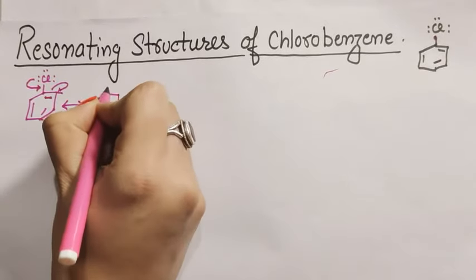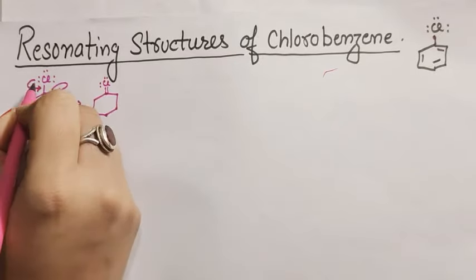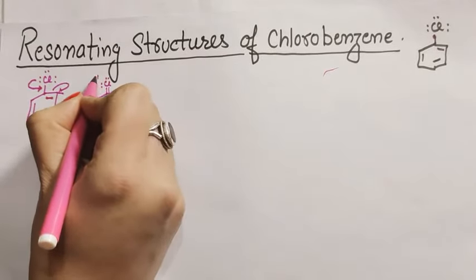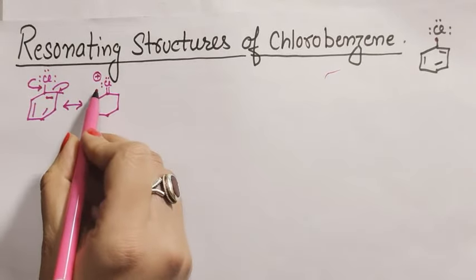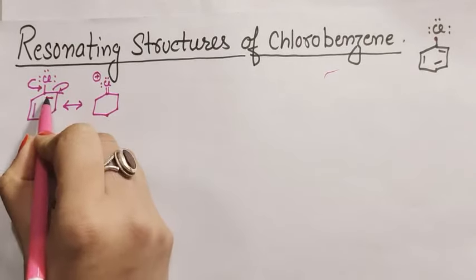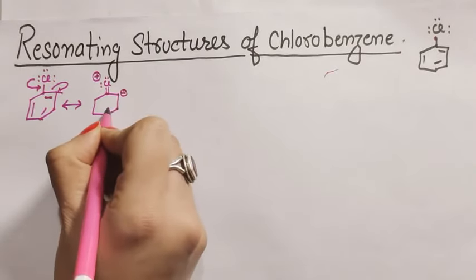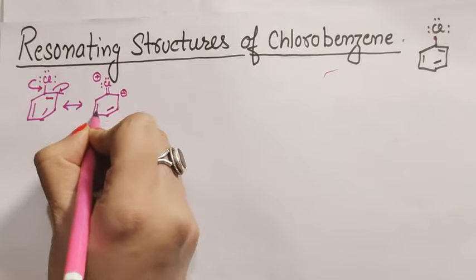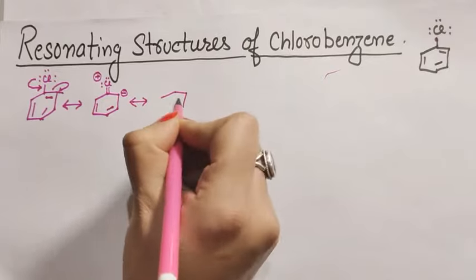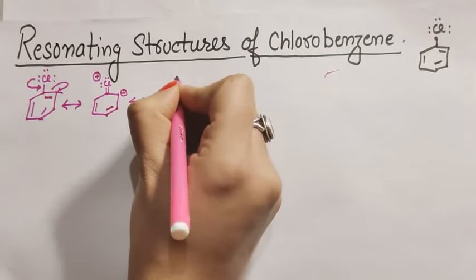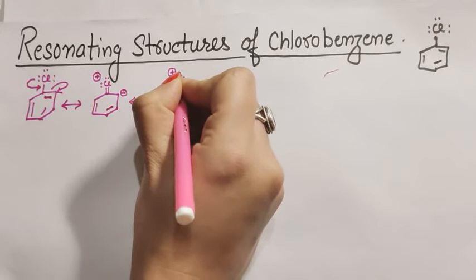Now chlorine with two lone pairs. And here we have the electrons, which we have to show. And here we have the bonds as it is. Double-headed arrow next, which is the resonating structure.